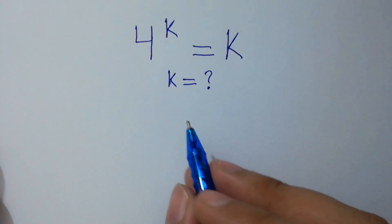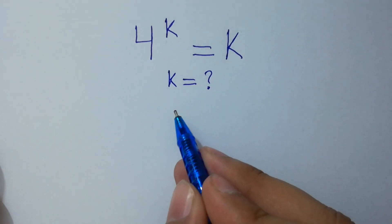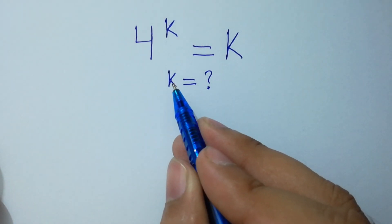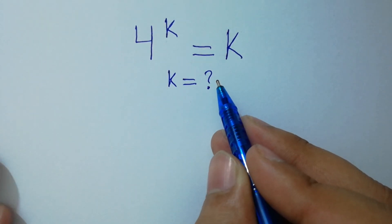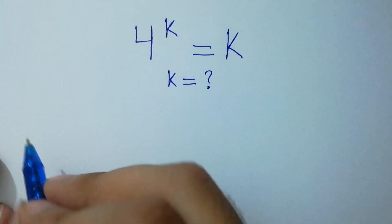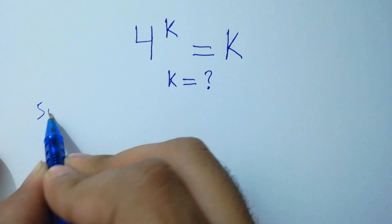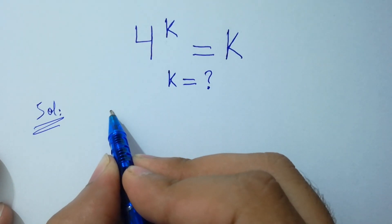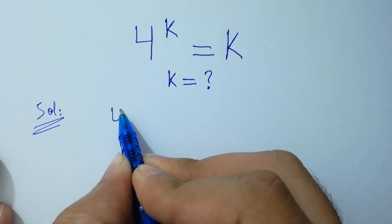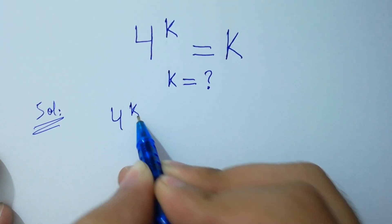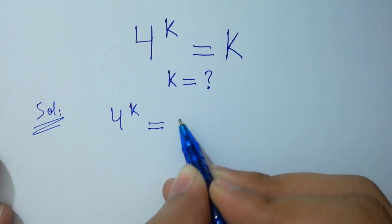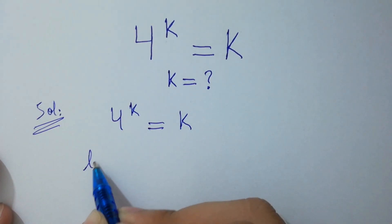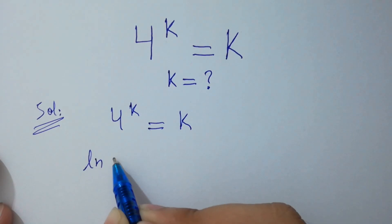Hello friends. Find the value of k if 4 to the power k equals k. Let's solve it. We have 4 to the power k equal to k. Take natural log on both sides.